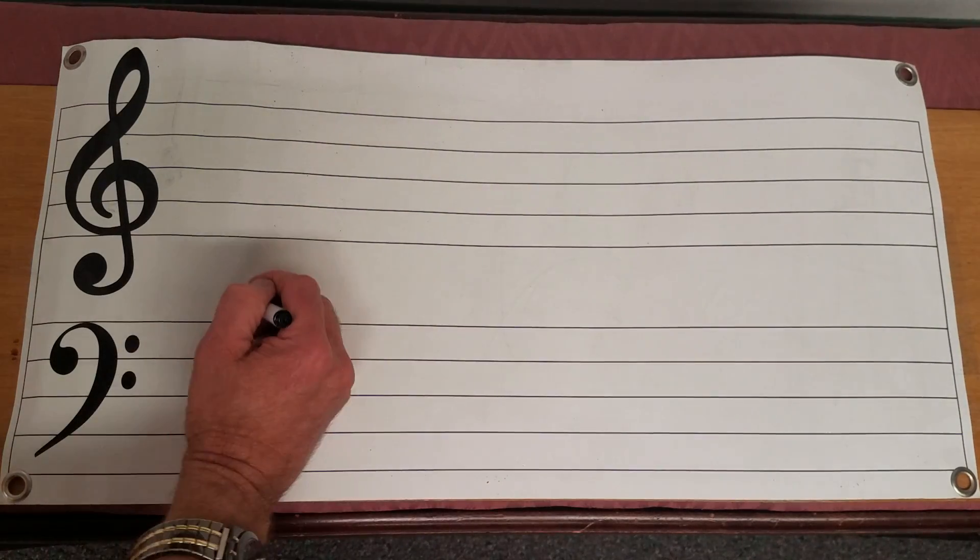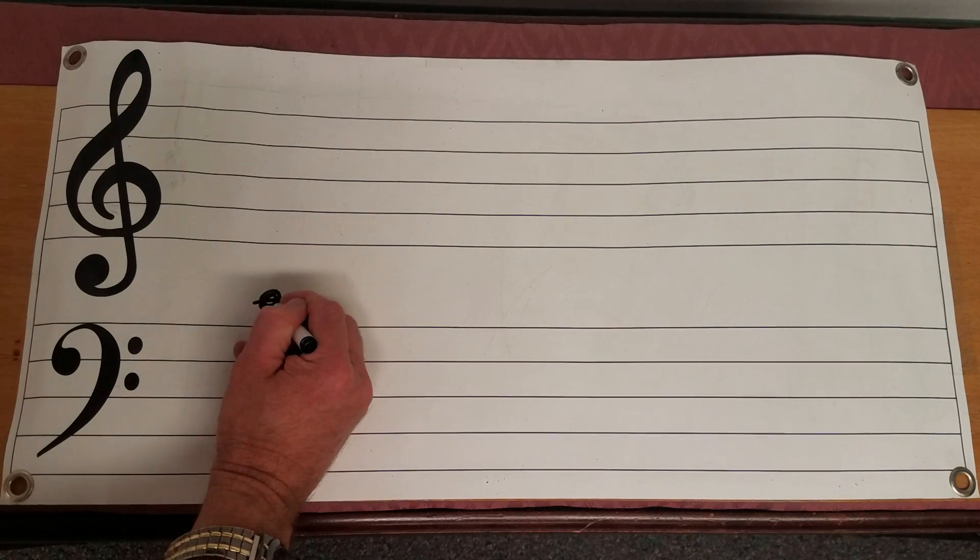Now again as you recall in all the other lessons we have simply A, B, C, D, E, F, G. Those are all the notes that we ever have to worry with in note reading on the staffs because they do repeat themselves.